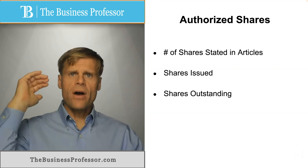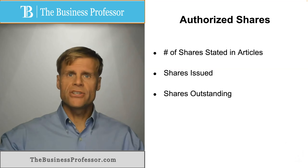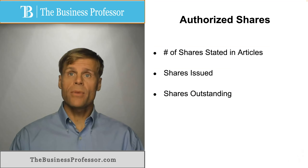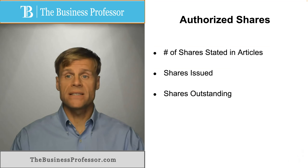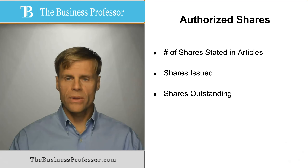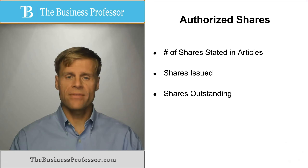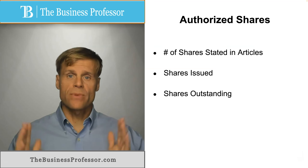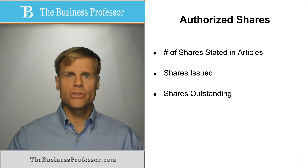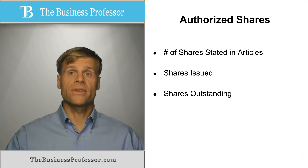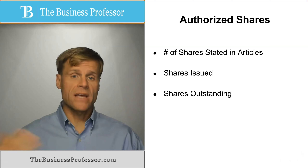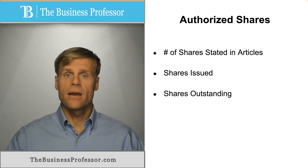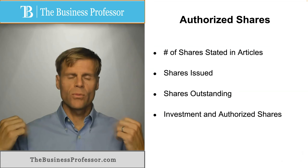You have authorized shares, then you have shares that are issued. Shares outstanding means how many shares are still out there in the marketplace, because oftentimes companies repurchase shares or repurchase option rights. The outstanding number of shares will often differ from the issued number because issued will oftentimes be more than those outstanding due to repurchases, buybacks, or redemptions by the corporation.